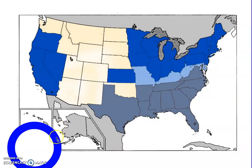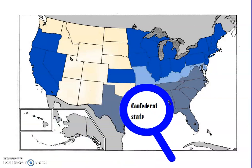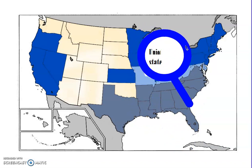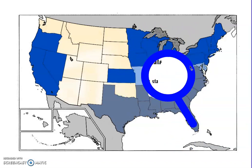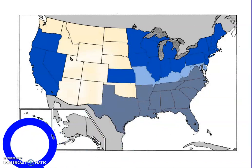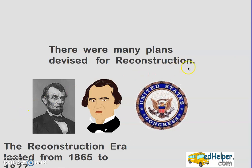This map shows the United States at the time — the Confederate states are on the bottom in dark gray, the Union states in darker blue, and the border states in lighter blue. More devastation occurred in the gray area, some in the light blue, and not as much in the darker blue. There were many plans devised for how to bring the country back together from two separate entities — the Union and Confederacy — into one United States of America. The Reconstruction era lasted from 1865 to 1877, about 12 years. You will learn more about those specific plans in the next part of this section.